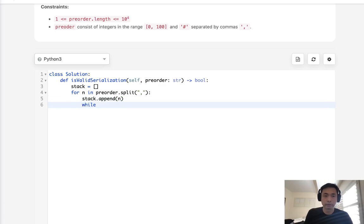So in our while loop, we have to first make sure that there's indeed three values here. So if the stack is greater than length two and the last two values in our stack,